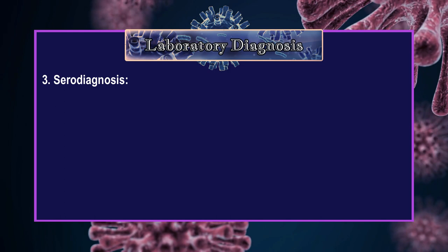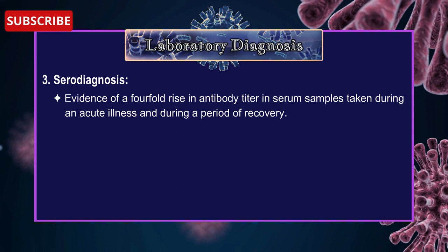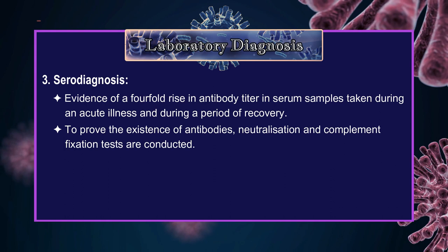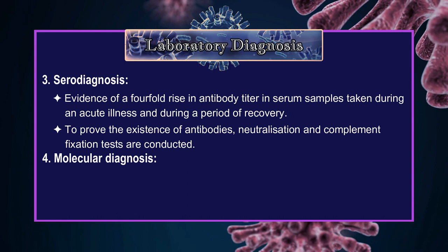3. Serodiagnosis: Evidence of a four-fold rise in antibody titer in serum samples taken during an acute illness and during a period of recovery. To prove the existence of antibodies, neutralization and complement fixation tests are conducted. 4. Molecular Diagnosis: Virus detection can also be accelerated using polymerase chain reaction tests.